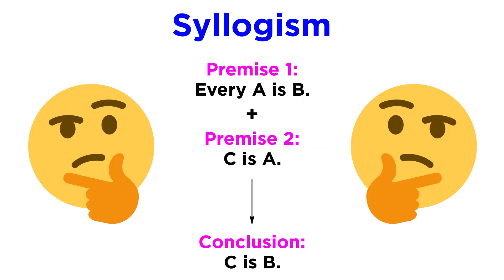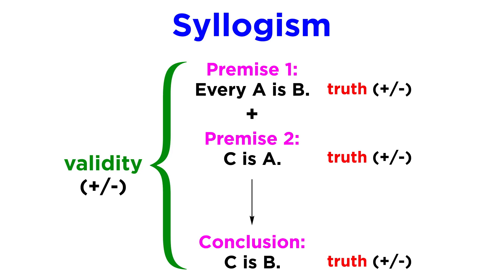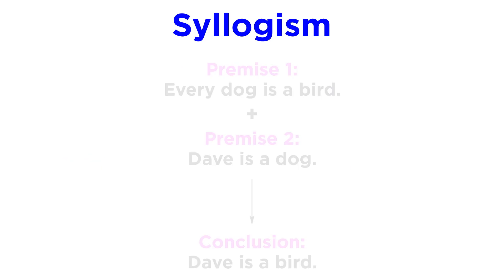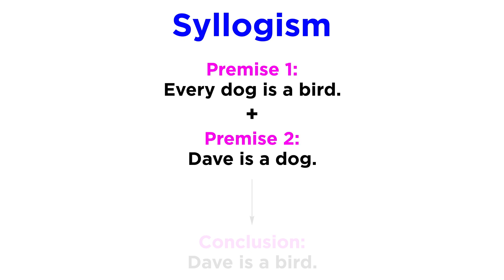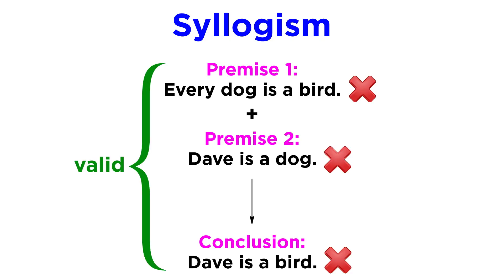This doesn't mean, of course, that it will be true. This is an important distinction: validity is a property of the format of the argument, while truth is a property of every individual sentence. For example, consider this argument: every dog is a bird; Dave is a dog; therefore Dave is a bird. Everything here is false, but it's still a valid argument, since it follows a proper structure and the conclusion does follow the premises, even though they are false premises.